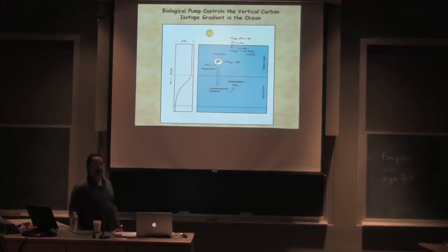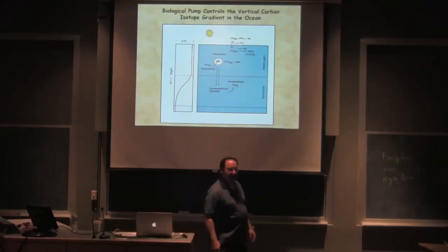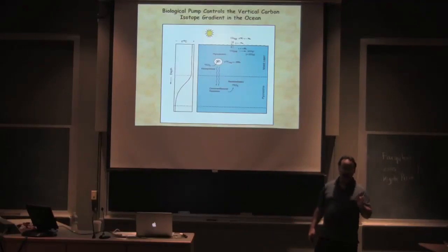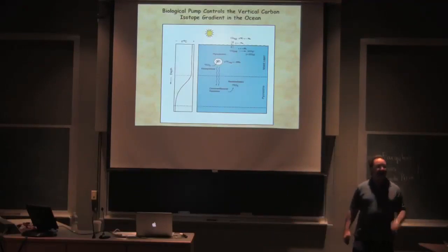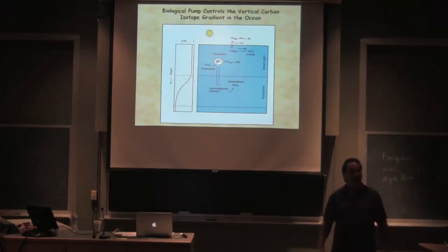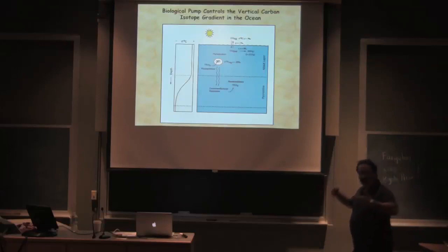So we find in the surface photic zone is that the delta C-13 of the inorganic carbon is enriched in C-13. It's shifted in a positive direction relative to that equilibrium effect that we just talked about. Yeah, the DIC, that's the DIC, yeah, right.